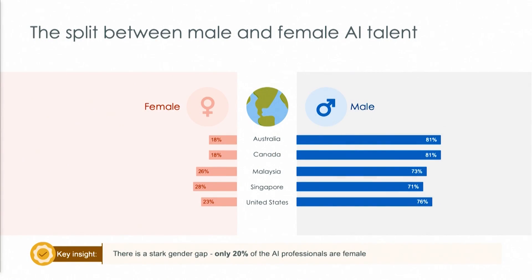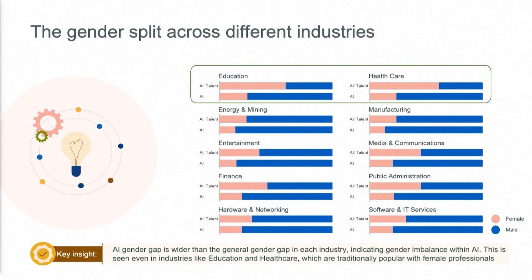We can also split the data by gender. It's probably not surprising to people in this room, but it's certainly concerning that we only have about 20% of AI professionals who are female — and this is across different countries everywhere. What's even more concerning is if I take a cut of this data by industries: the gender gap among AI professionals is way wider, and it's even the case in industries like education and healthcare that historically have been very popular among female professionals. This is really putting us at risk of widening the gender equity gap.